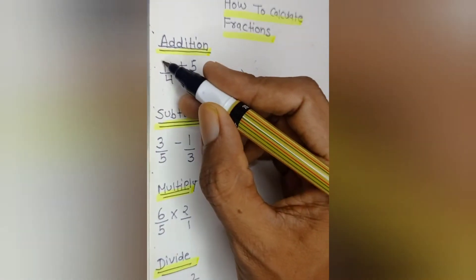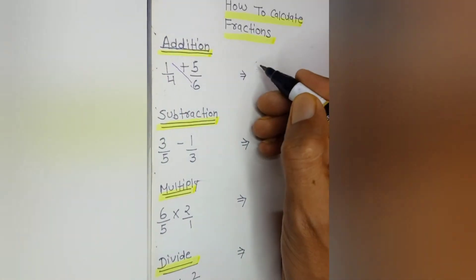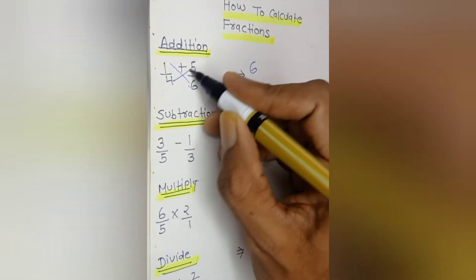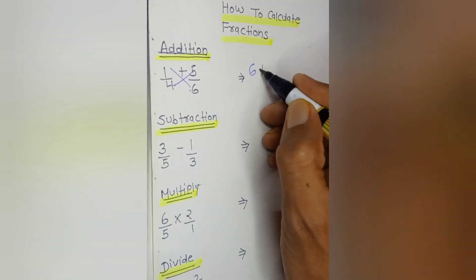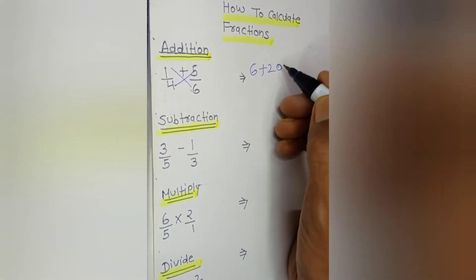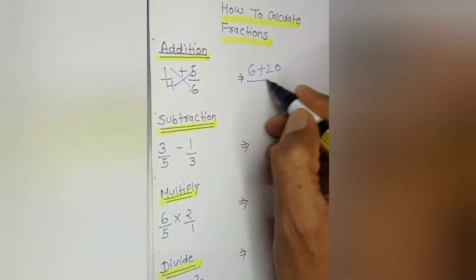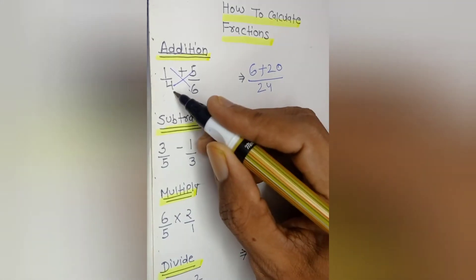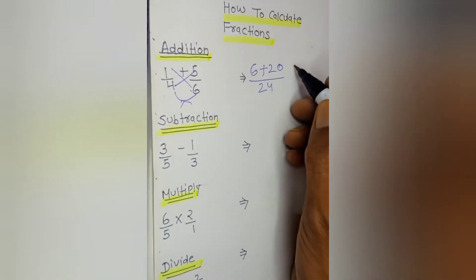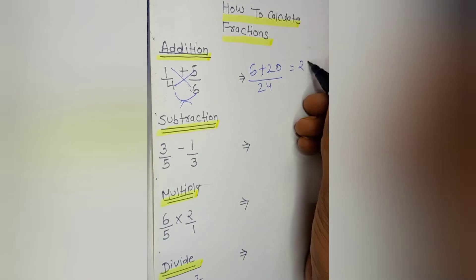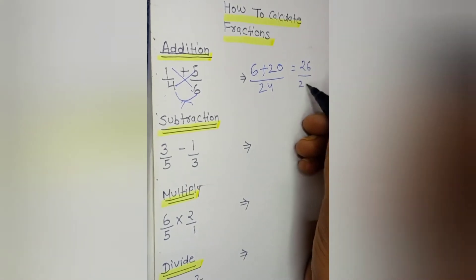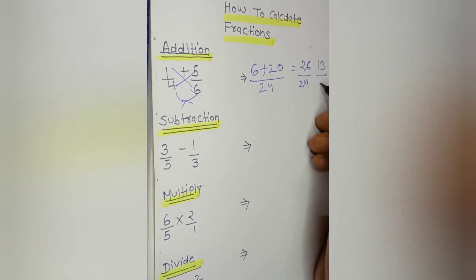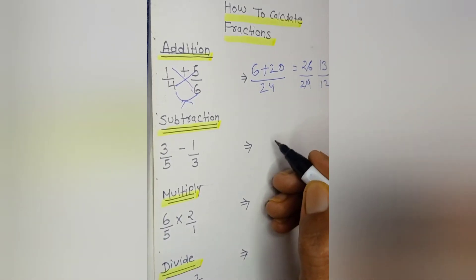Hello friends, let's start with fraction addition. 6 into 1 is equal to 6, now we have to multiply 4 into 5 is equal to 20. 6 plus 20 is 26. Now we have to multiply 6 into 4 is equal to 24. So we have to add up 26 upon 24. We cancel it out to get 13 upon 12.